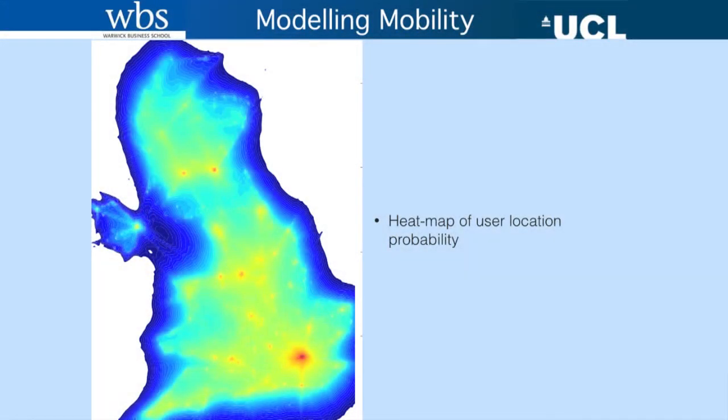Of course, this is just an example for one user. What I'd like to do is extend this to multiple users across the whole dataset. I've done the simplest thing: aggregate all the probability distributions to get a heat map of the probability of finding any Flickr user in the UK. You get what you would expect — the shape of Great Britain and Northern Ireland, with a lot of probability concentrated in London and a few other major cities.